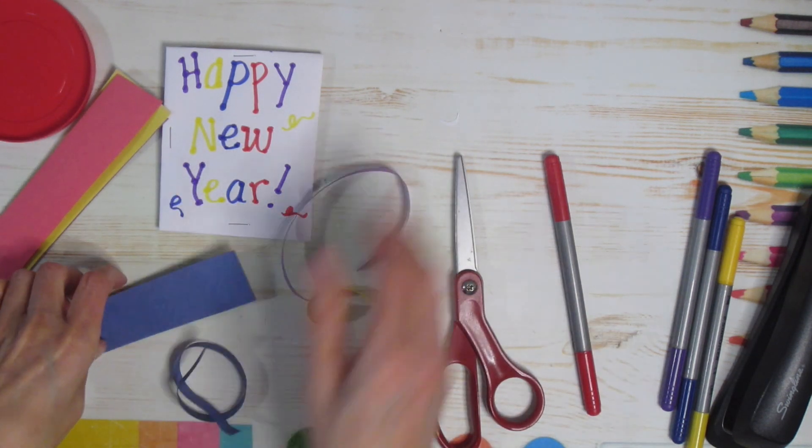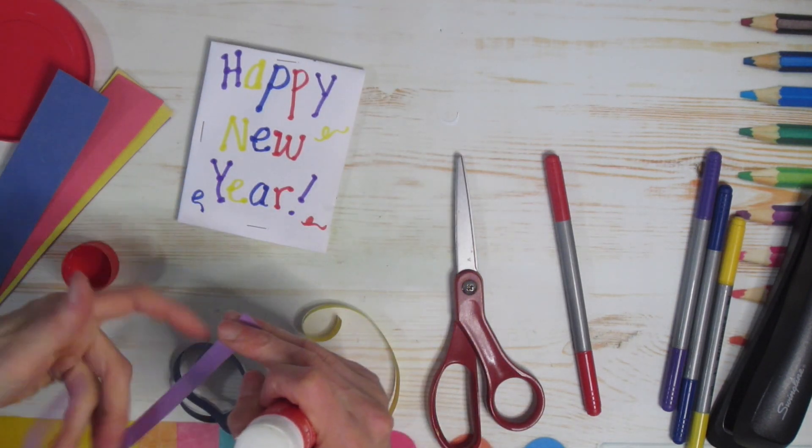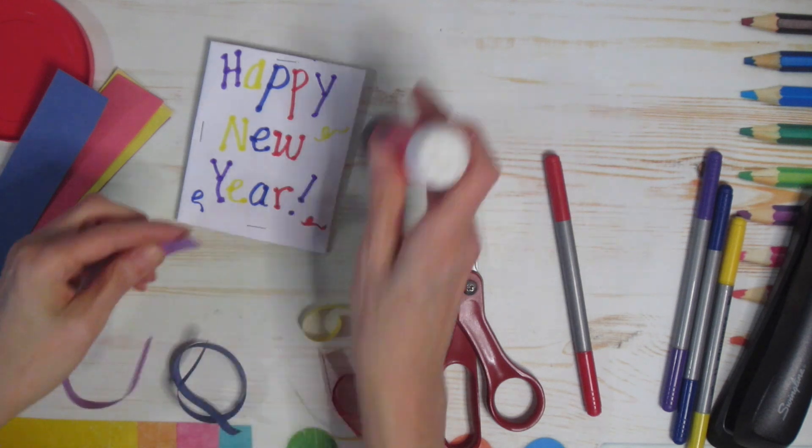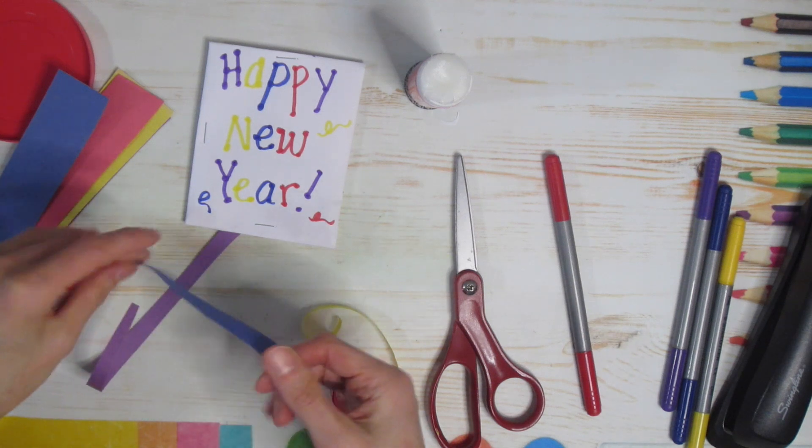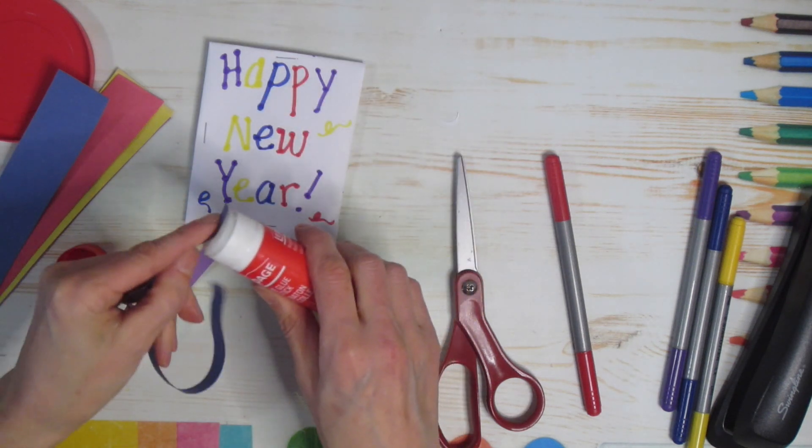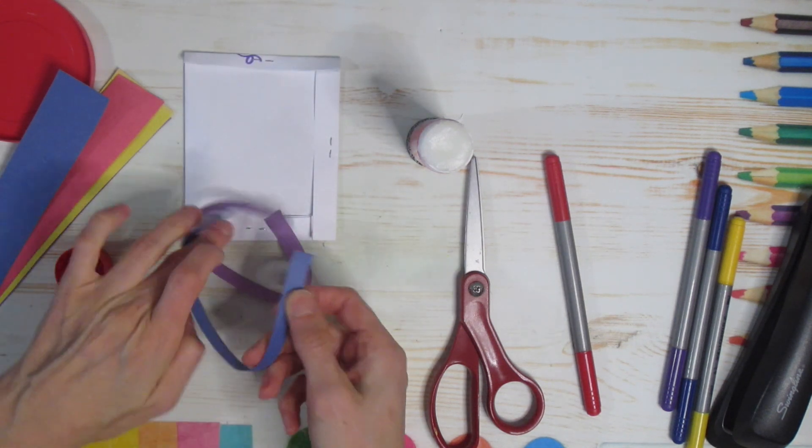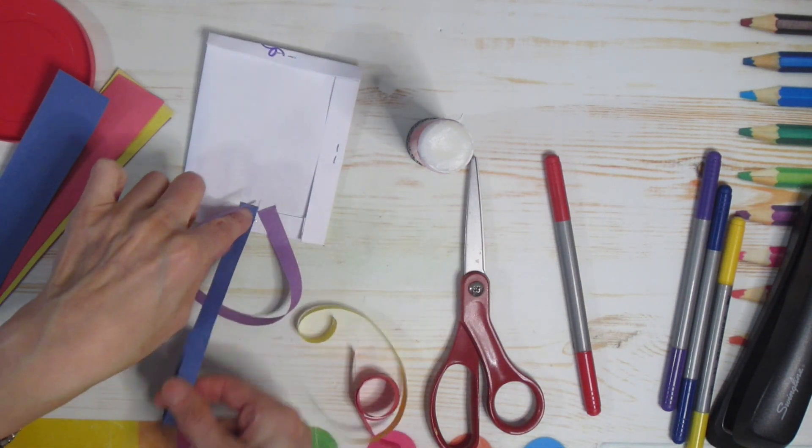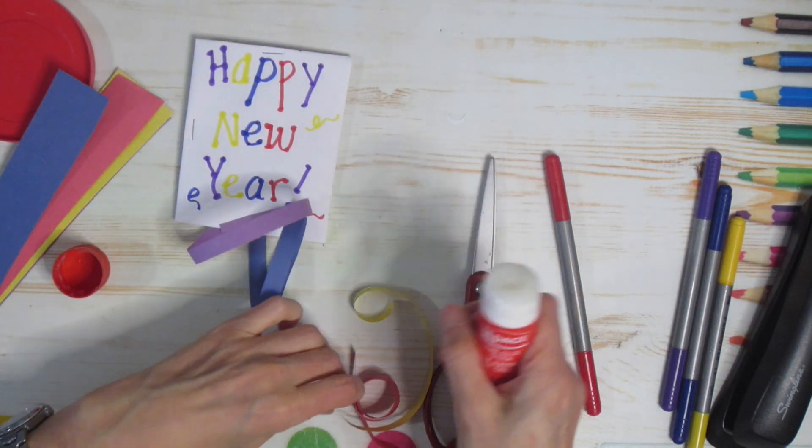Once I have that I'm gonna take my glue and I'm going to glue those coming out from the bottom. Now you could do it anywhere but I like having it come out from the bottom. So you'll see I'm just putting some glue on the end and if I turn it over I'll show you what's happening. I'm just gluing it from the back like this. That's what I'm doing.